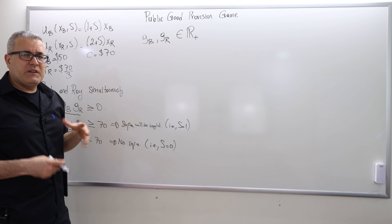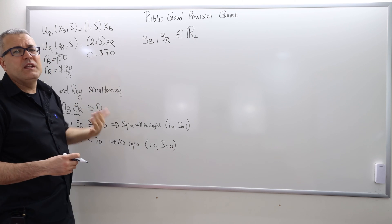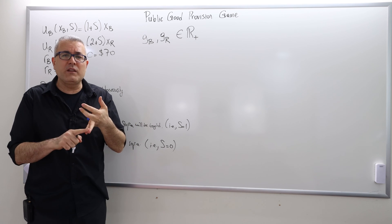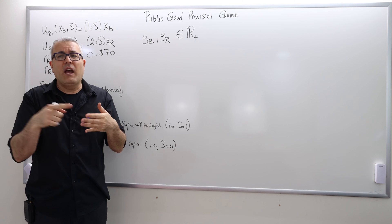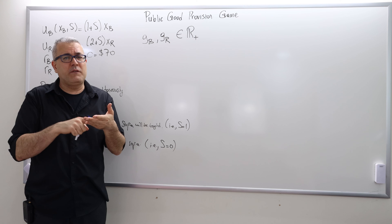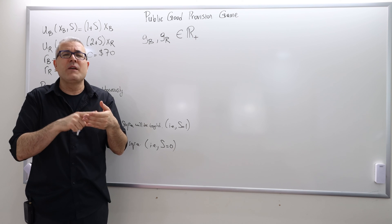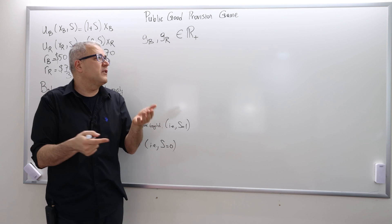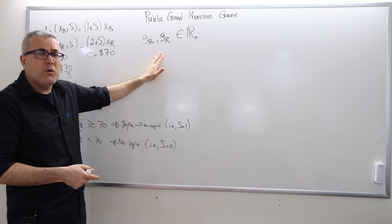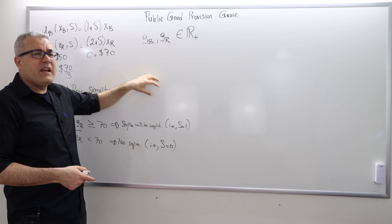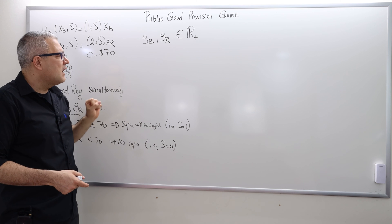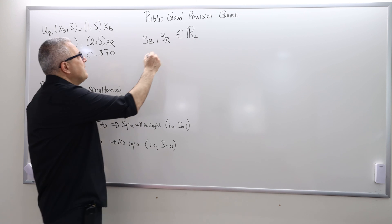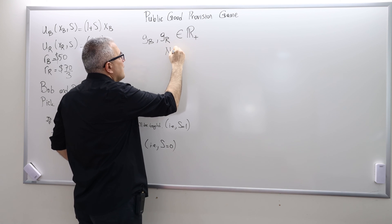For this game it's impossible to draw the matrix form because there are infinitely many strategies. So you can contribute $0, you can contribute $1, $2, $3, et cetera. And by the way, I mean, why $1? Like what about $0.50? So any number between $0 and $1 is admissible. Therefore there are infinitely many possible strategies for both players, so we can't really draw the matrix form.